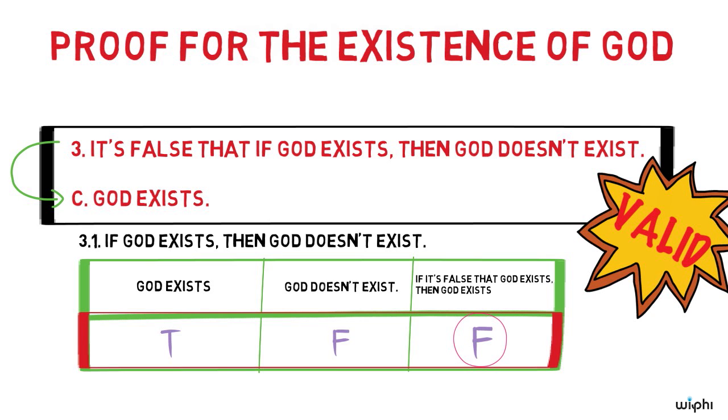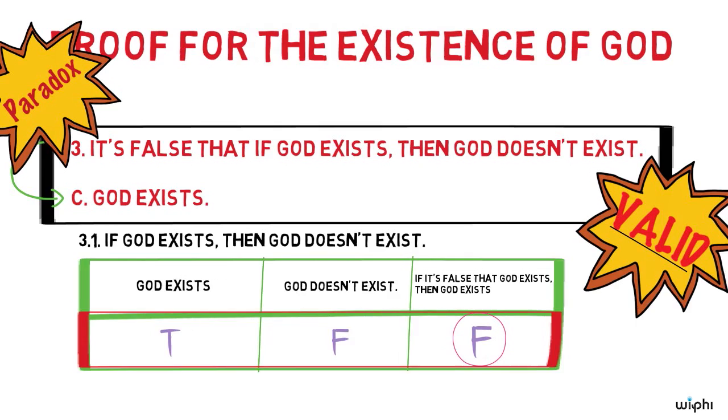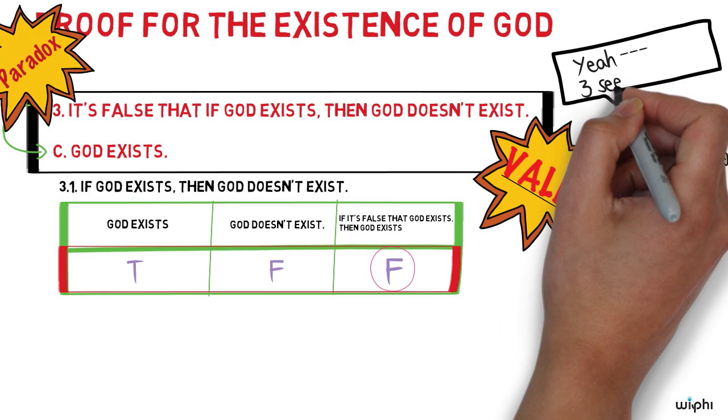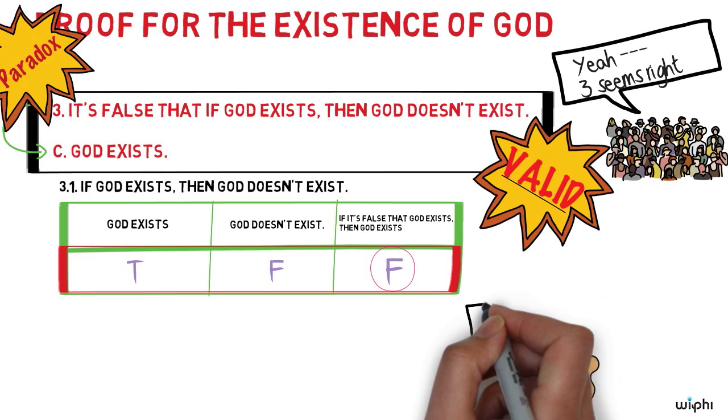Hence, according to the theory, this proof of God's existence is valid. What's paradoxical here is that everyone, it seems, should accept the premise three, whatever their theological leanings. But no one should merely on that basis accept its conclusion that God exists.